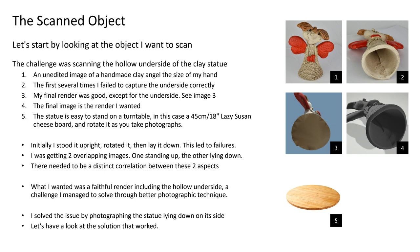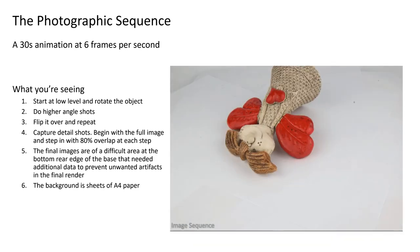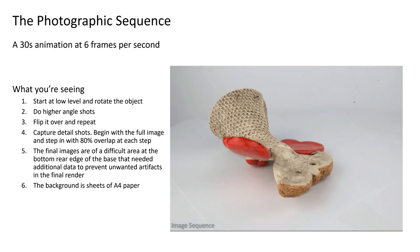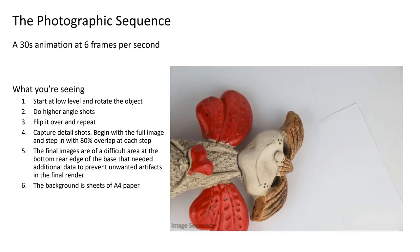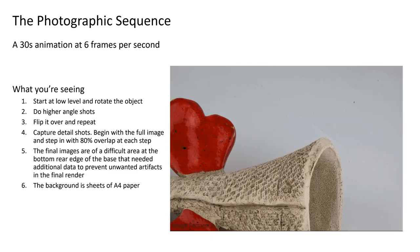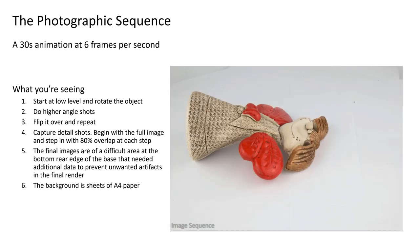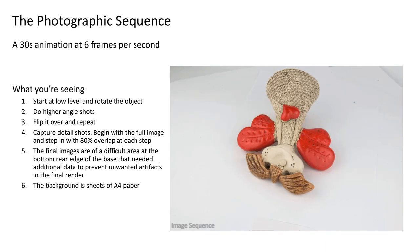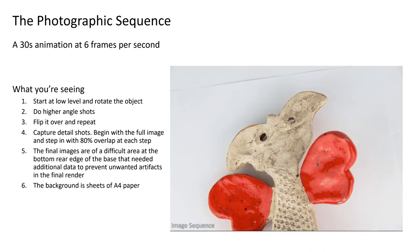I learned to put the statue down on its back, shoot the images, and repeat after flipping it over. We're going to see a 30-second, 6fps animation, after which I'll talk you through it. I shot at low level rotating the subject, then came higher angle shots — flip it over and repeat. Then I got close to capture detailed shots of the face and the holes, beginning with the full image and stepping in with 80% image overlap at each step. The final images are of an area at the bottom rear edge of the base that needed additional data to prevent unwanted artifacts in the final render.